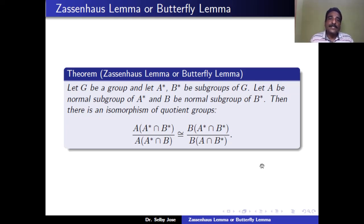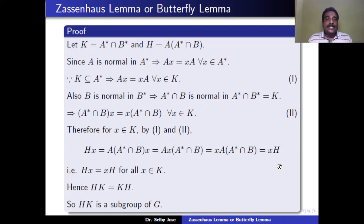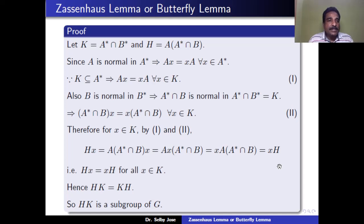Let us see the proof of this lemma. Let K = A* ∩ B* and H = A(A* ∩ B). Since A is a normal subgroup of A*, by definition HA = AH for all H in A*. Because K = A* ∩ B* is a subset of A*, we have AH = HA for all H in K. This we call equation (1).